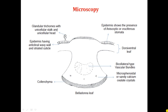Second, it shows the presence of bicollateral type vascular bundle. Earlier we saw bicollateral type vascular bundle in cloves; belladonna is the second drug showing this. Third, it shows the presence of microspheroidal or sandy crystals of calcium oxalate. All three drugs of the Solanaceae family — Hyoscyamus, Belladonna, and Datura — show the presence of microspheroidal or sandy crystals of calcium oxalate.